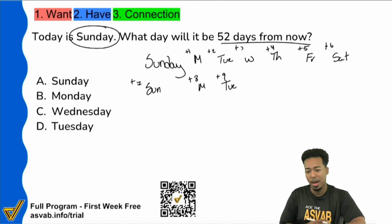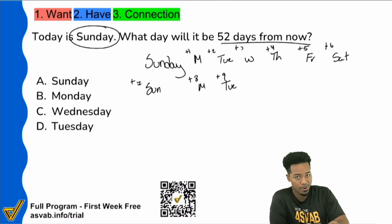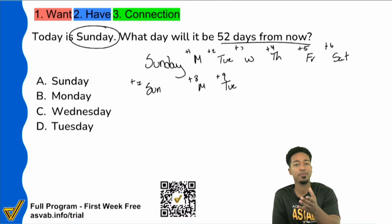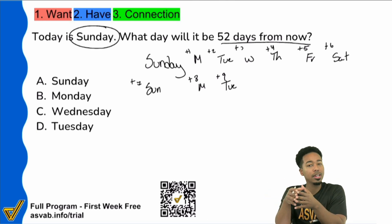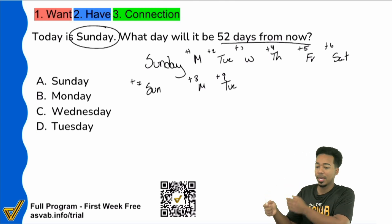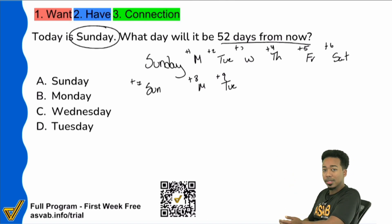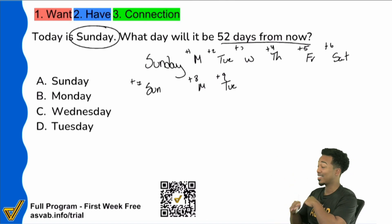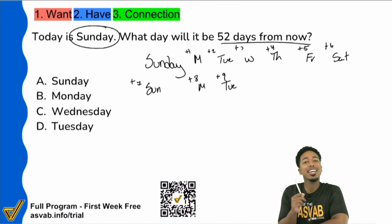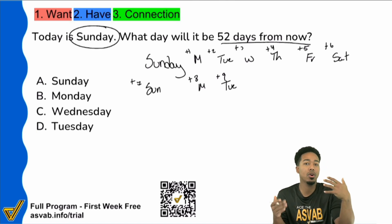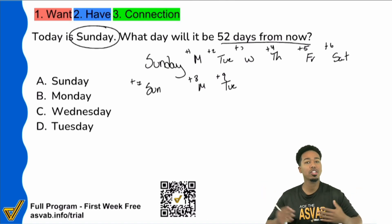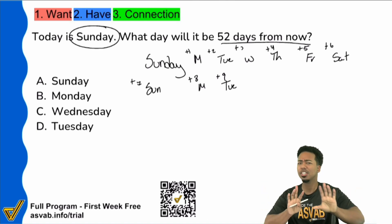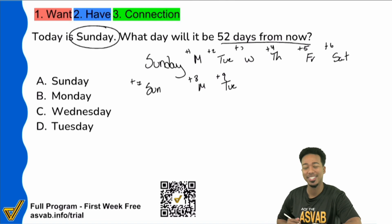Do you notice a possible pattern here? Because remember, a week is seven days. So if we want to know what day it'll be 52 days from now, we don't actually need to count like that. What we can do to make this so much faster is notice that this is what's called a modulus question, or a remainder question — a question that has to do with remainders. Just to keep it simple.